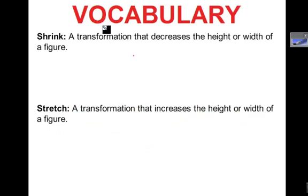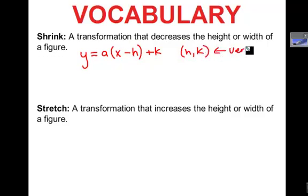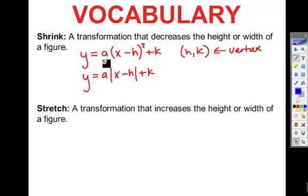To shrink is a transformation that decreases the height or width of a figure. So we've already talked about the fact that most of the equations we've been working with have been in the form y equals a times the quantity x minus h plus k, where h and k is our vertex. This is either in quadratics where we have a parabola or also in absolute values where we have the v-shaped graph. And a lot of you have asked what a was and I said we'd get to it later. And today we'll learn that a is our shrinking or our stretching factor.